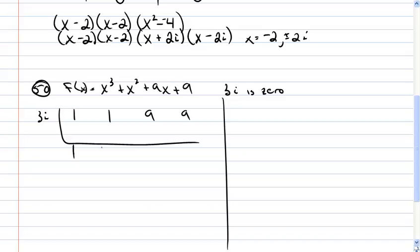So I bring the 1 down, 3i times 1 is 3i. 1 plus 3i is 1 plus 3i. So I multiply, and this is going to be 3i times 1 is 3i. 3i times 3i is going to be plus 9i squared, which is negative 9. 9 minus 9 is 0, I'm back to 3i. 3i times 3i is 9i squared, which is negative 9, I have a 0 remainder.